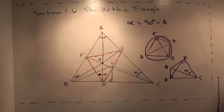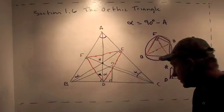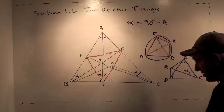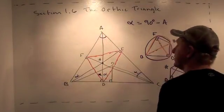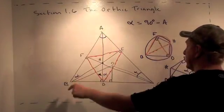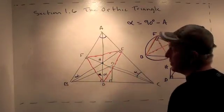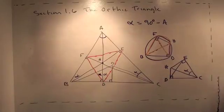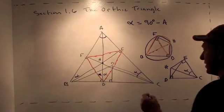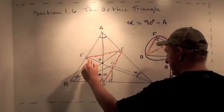But this tells us a really remarkable fact about the Orthic Triangle. And the remarkable fact is the altitude in the big triangle ABC is actually the angle bisector of the Orthic Triangle. That's a clever little fact. And that means this angle here, which I'll do the same thing.